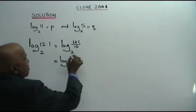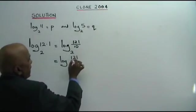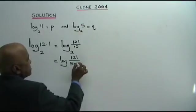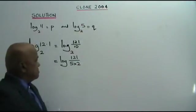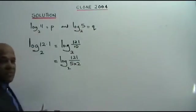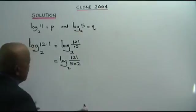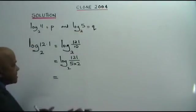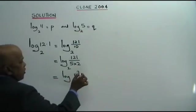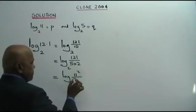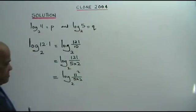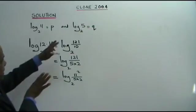Log 121 over 5 times 2, base 2. This we simplify further. Log 11 squared over 5 times 2, base 2. I hope you get it until here.